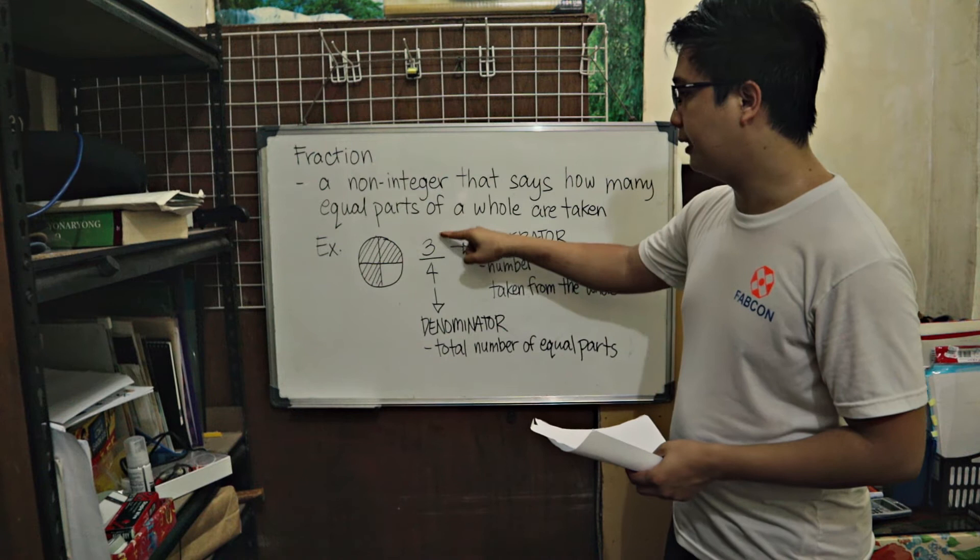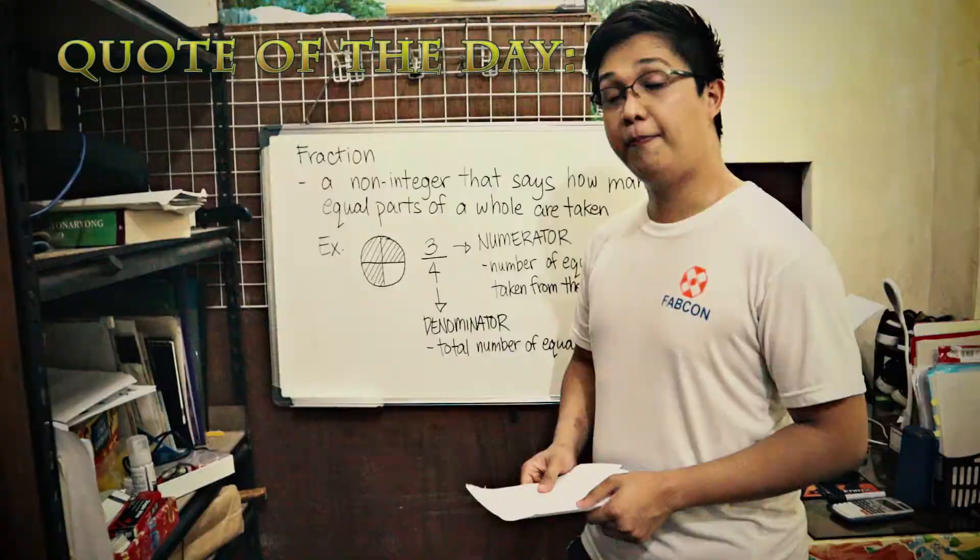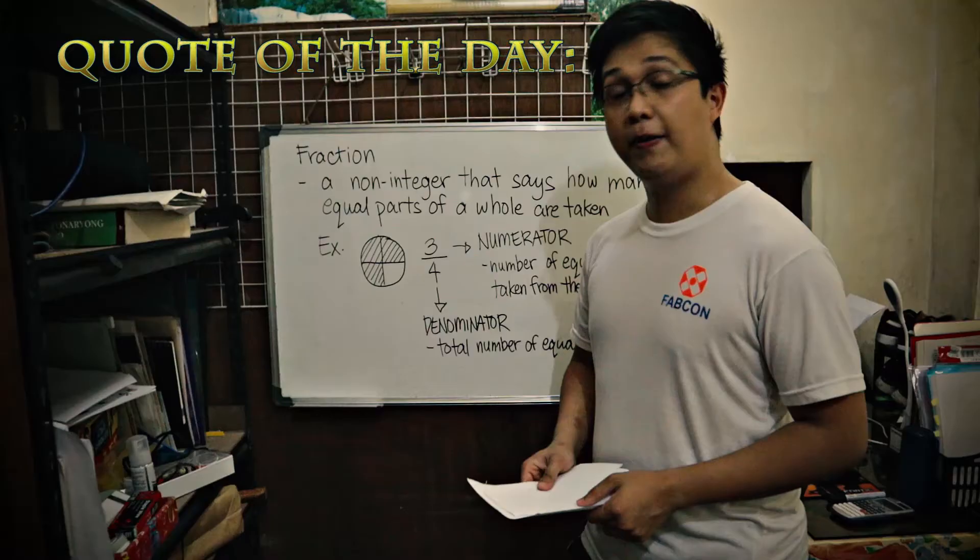In yung linya, sa tunga sa 3 to 4, sa tunga sa numerator kag denominator, ang mga atong ginatawag nga fraction bar. Kagamoy na siya kung paan magbasa sa fractions. Kapag totoo, fact yun. Kung kalahati lang, fraction.